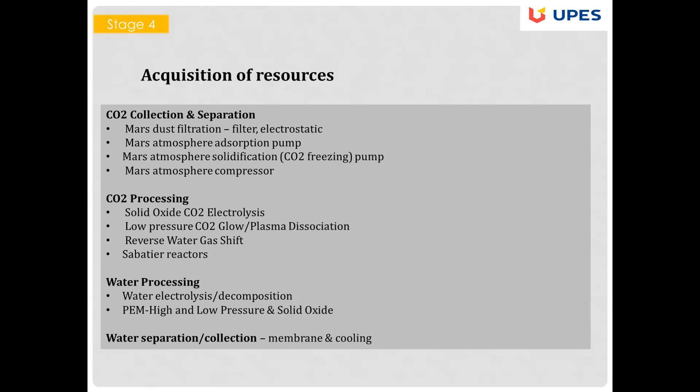The MOXIE atmosphere compressor has high tolerance for dust, robustness to harsh environments, and includes an integrated filter on the suction inlet to remove dust and particulates before entering the compressor. Steps to process carbon dioxide include: solid oxide CO₂ electrolysis, low-pressure CO₂ glow plasma dissociation, reverse water-gas shift reaction, and the Sabatier reactor. For water processing, we use water electrolysis or decomposition and can separate water by membrane and cooling methods.